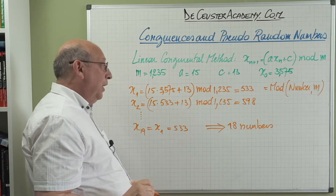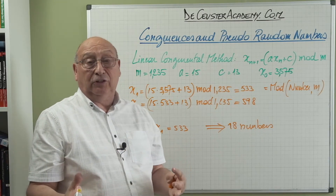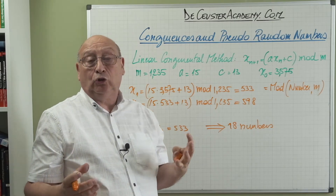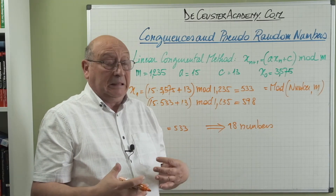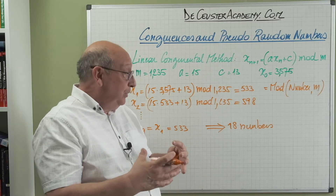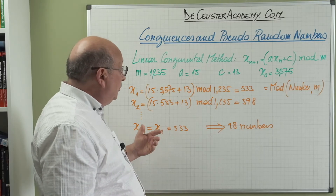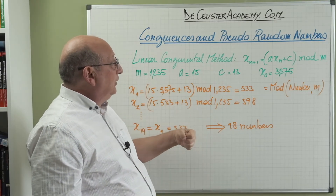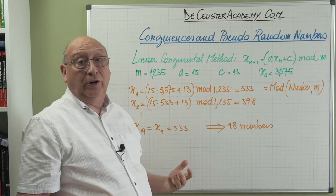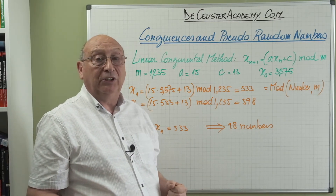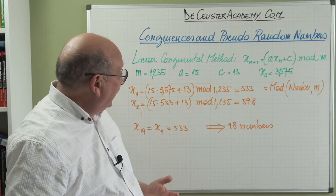If we had selected x_0 as a different value smaller than 1235 we could include it in the count, but since we selected it manually it's not really a random number. The key observation is: when we increase m, we automatically get more pseudo-random numbers available to use.